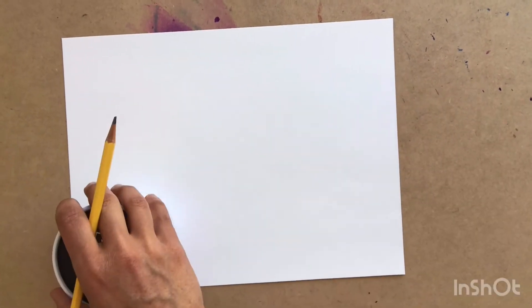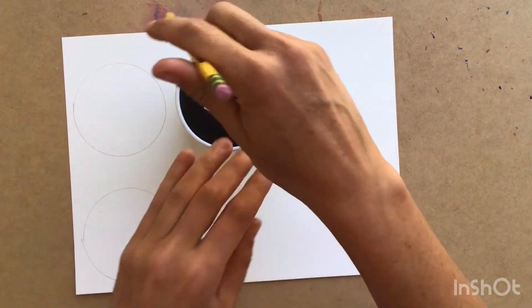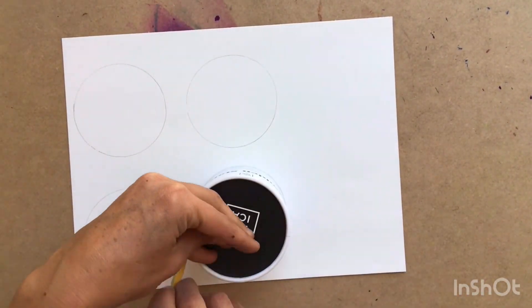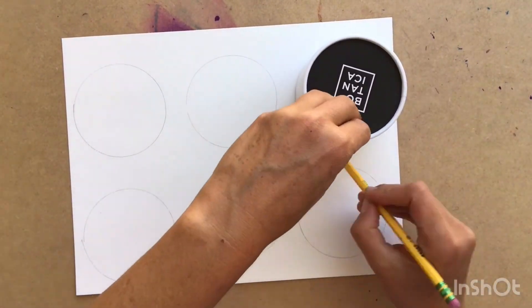Let's start by tracing our circle six times. We're going to be creating a baker's dozen, which means a half a dozen, so we're going to be making six doughnuts.